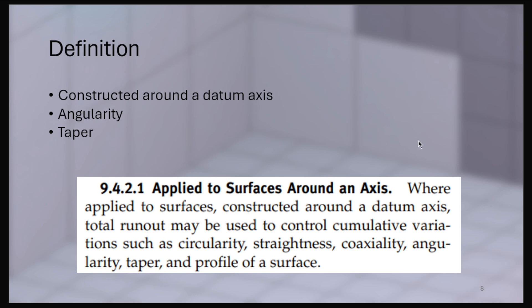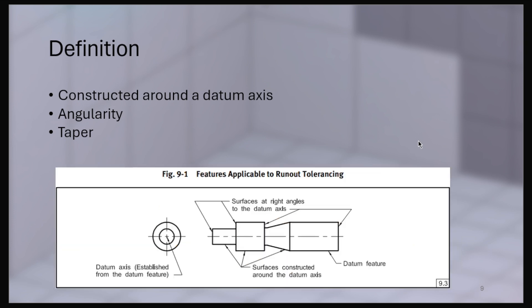So if you're looking at this, you're reading this, and you're saying, well, a total runout can be applied to a surface constructed around a datum axis controlling angularity and taper, why should it not be able to control a cone? Because in figure 9-1, it points at a conical face and specifically calls it a surface constructed around a datum feature.